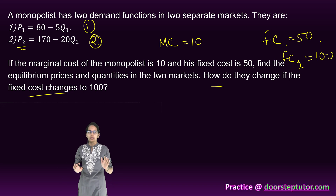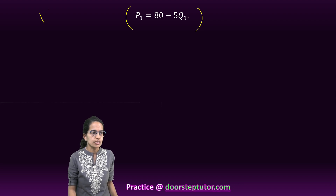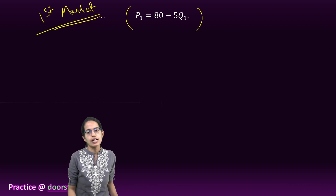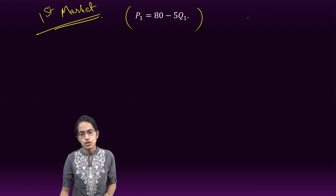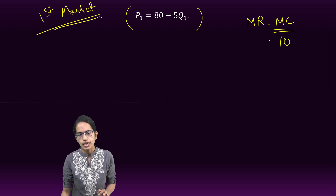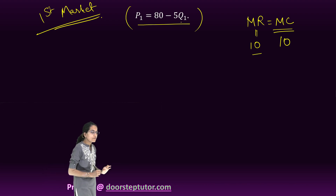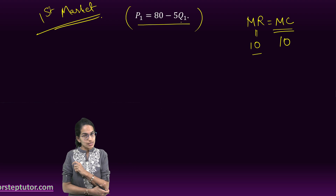Let's solve it for the first market condition. The profit maximizing equilibrium occurs when marginal revenue equals marginal cost. We already know marginal cost equals 10, so marginal revenue would also be 10. With the given demand function, we can find marginal revenue in terms of P and Q.